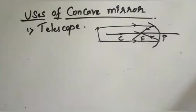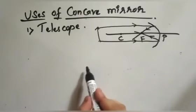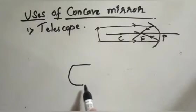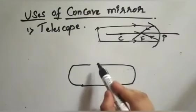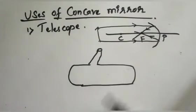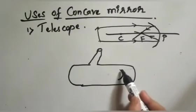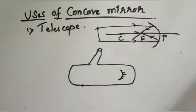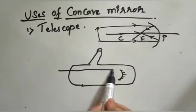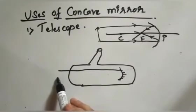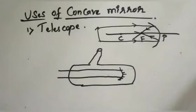This principle is used in most devices that use concave mirrors, and the most important of these devices is the telescope. Let me draw a sketch of a telescope. This is the eyepiece where you look through. A concave mirror is kept here — concave mirror converges the ray of light to a single point, which is why it is also called a converging mirror.